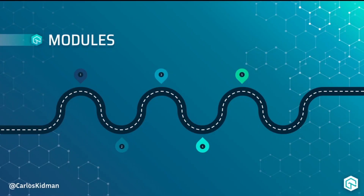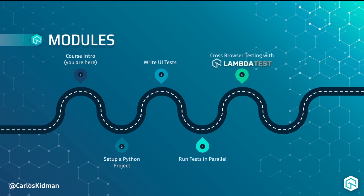In this course, there are five modules. We're starting off with the course introduction, which is where you're at right now. Then we'll set up a Python project where we'll use VS Code to get a project ready for automation. We'll then write our UI tests where we'll create our first automated tests with Python and PyTest. Then we'll get those same tests and run them in parallel. And finally, cross-browser testing with LambdaTest, where we'll run our tests across multiple OSes and browsers using LambdaTest.